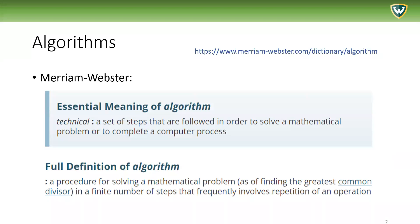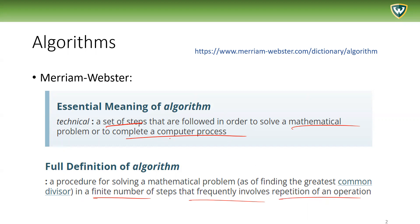So what are algorithms? According to Merriam-Webster, algorithms are a set of steps that are followed in order to solve a mathematical problem or to complete a computer process. It's essentially a set of steps involved in a computer process or mathematical problem — a procedure for solving a mathematical problem in a finite number of steps, frequently involving repetition of an operation.